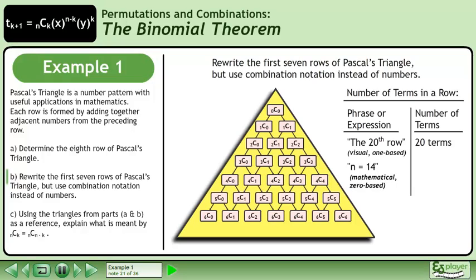n equals 14 implies mathematical zero-based counting. There are 15 terms in the row.